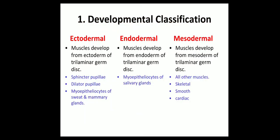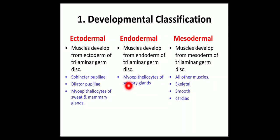Here is some detail of the developmental classification. As you know from embryology, there is present a trilaminar germ disc. The trilaminar germ disc has three layers: the ectoderm, the endoderm, and the mesoderm. The muscles which develop from the ectoderm are known as ectodermal muscles — these include sphincter pupillae and dilator pupillae, which are the intrinsic muscles of the eyeball, and myoepitheliosites of the sweat and mammary glands. The endodermal muscles take origin from the endoderm — for example, myoepitheliosites of salivary glands.